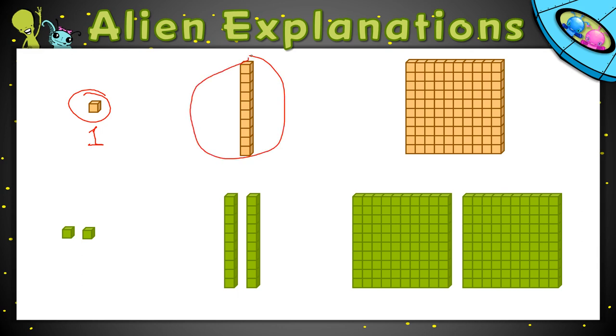Here, I have our stack of 10 cubes. This is sometimes called a long or a rod. It has a value of 10. And then when I have 10 groups of these rods, 10 groups of 10, I have what's sometimes called a flat, and it has a value of 100.